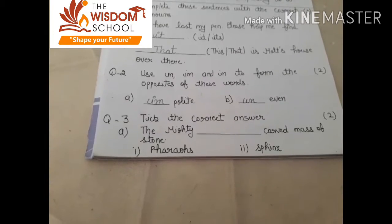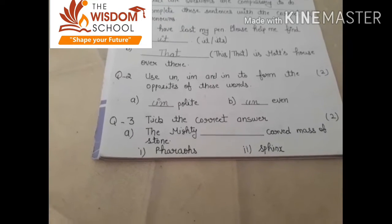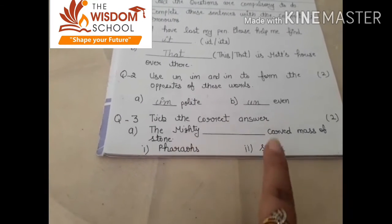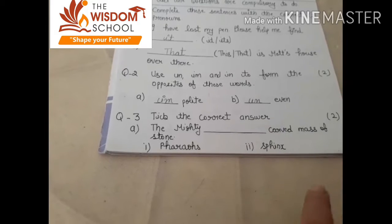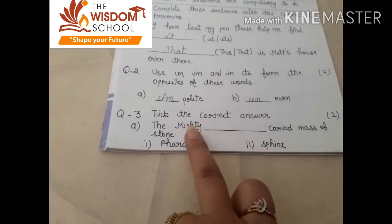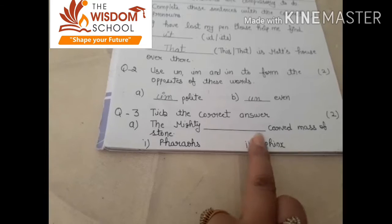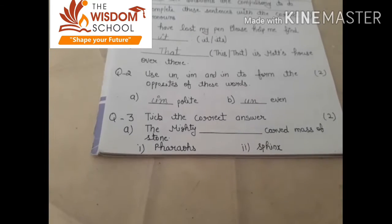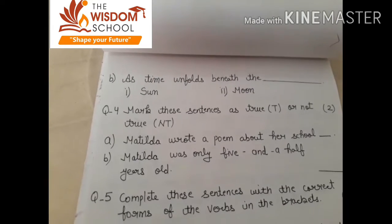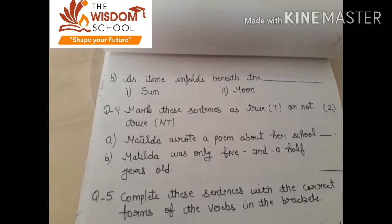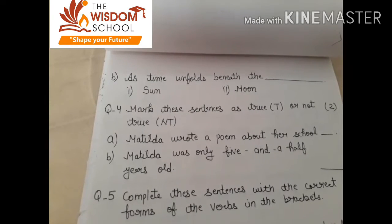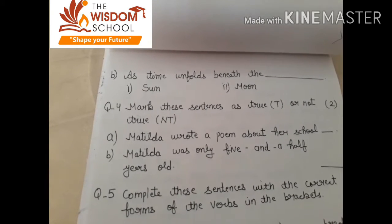Third, tick the correct answer. The mighty curved mass of stone — mass of stone ko curve karke kya banaya hai? Sphinx. So you have to tick on the Sphinx option. Next: as time unfolds beneath the sun — you have to tick on the sun option.